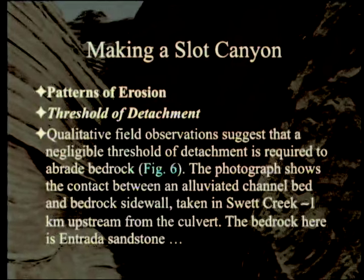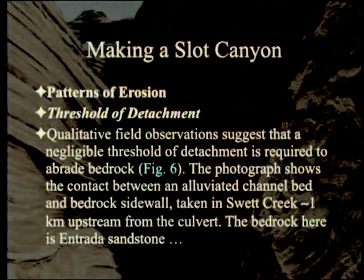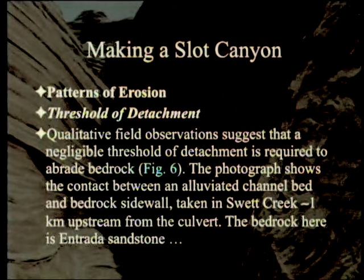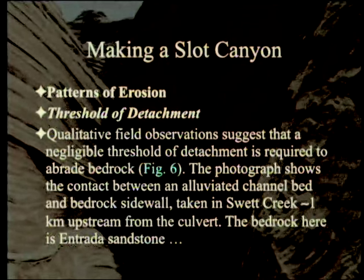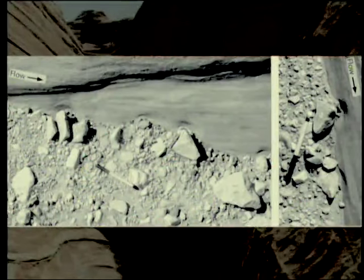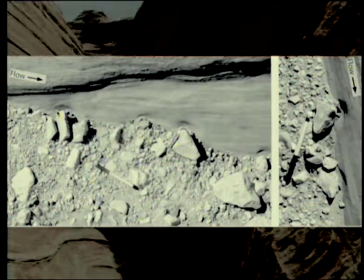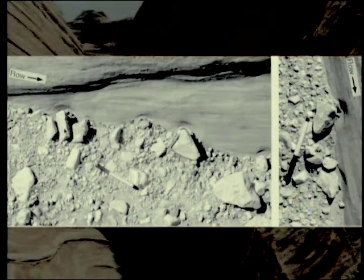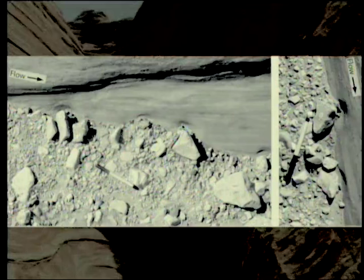Patterns of erosion: qualitative field observation suggests a negligible threshold of detachment is required to abrade bedrock. A photograph shows the contact between an alluvial channel bed and bedrock sidewall taken in Sweat Creek approximately one kilometer upstream from the culvert. The bedrock here is Entrada sandstone, very similar to the Navajo. Around the rocks, the water has been diverted and started to erode the side of the channel, meaning that even at flow rates that didn't move the rocks, there was still erosion.